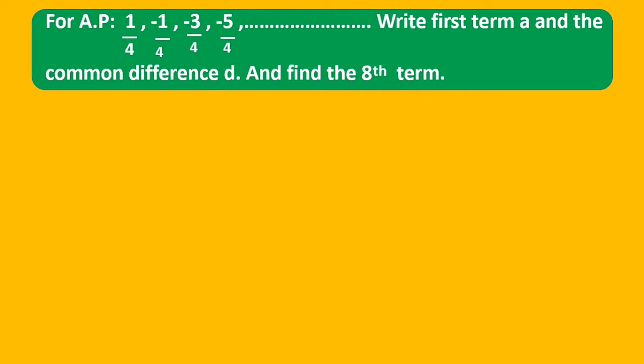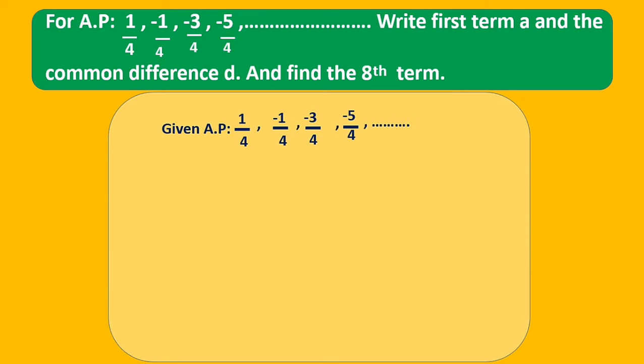For a given AP, write the first term a and common difference d, and find the 8th term. The given AP is 1/4, -1/4, -3/4, -5/4, and so on.